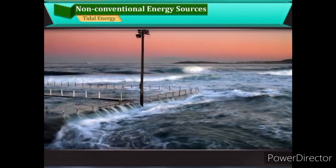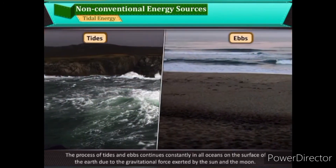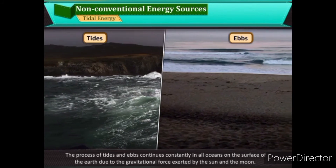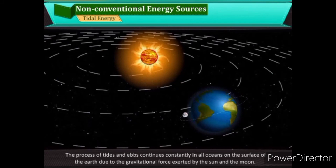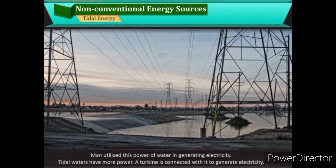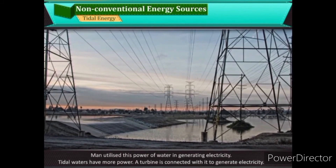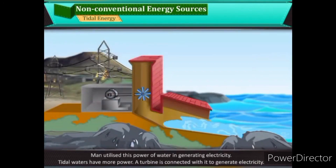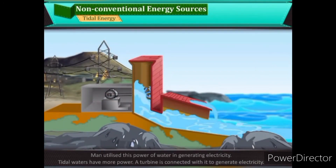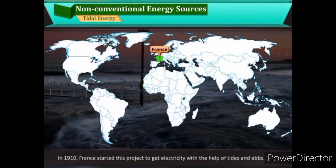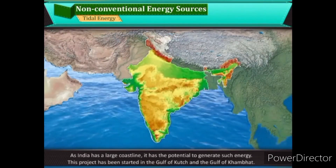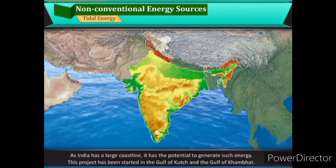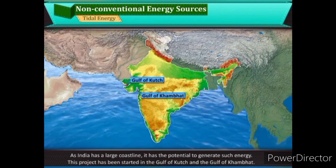The process of tides and ebbs continues constantly in all oceans due to the gravitational force of the sun and moon. Man has utilised this power of water in generating electricity by connecting a turbine to tidal waters. In 1910, France started this project to generate electricity through tides and ebbs. As India has a large coastline, it has the potential to generate such energy, and this project has been started in the Gulf of Kutch and the Gulf of Khambhat.